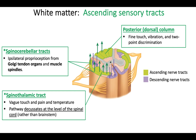It's ipsilateral proprioception — meaning signals from your right side of the body are going up the right side of the spinal cord, same side, up to the right side of the cerebellum. If it were contralateral, that means the signal has to go over to the other side.